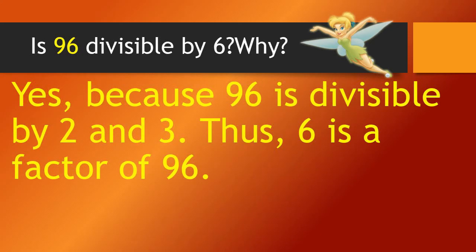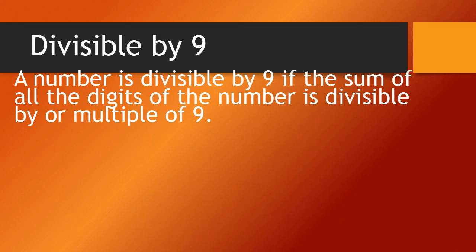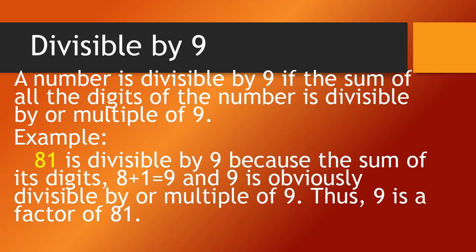Thus, 6 is the factor of 96. Let's proceed to divisible by 9. A number is divisible by 9 if the sum of all the digits of the number is divisible by — or a multiple of — 9. Example: 81 is divisible by 9 because the sum of its digits, 8 plus 1, equals 9, and 9 is obviously divisible by 9. Thus, 9 is a factor of 81.